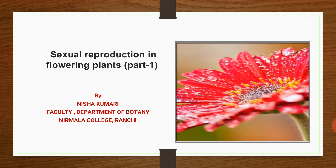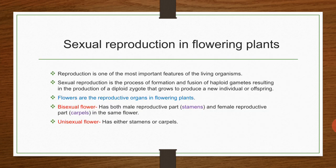In this video, we will study about the reproductive structures in flowering plants or angiosperms. Reproduction is a fundamental feature of life which enables the continuity of the species generation after generation. Sexual reproduction is the process of formation and fusion of haploid gametes resulting in the production of a diploid zygote that grows to produce a new individual or offspring.